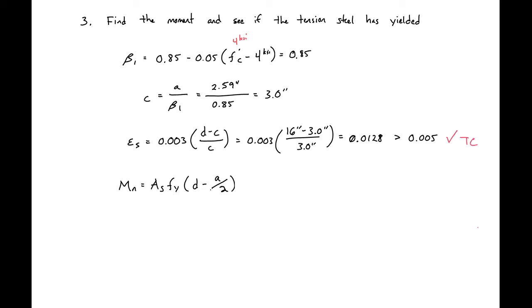And then we can also find our nominal moment. So our AS is 7.62 square inches times 60 KSI steel times our D, 16 inches minus 2.59, so A over 2. And this will give us an MN equal to 6,724 kip inches. So that's our flexural capacity of our section.